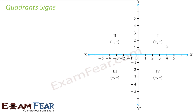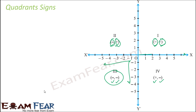In the first quadrant both x and y coordinates are positive. In the second quadrant x is negative and y is positive. In the third quadrant both are negative. In the fourth quadrant x is positive and y is negative. Don't memorize — just understand why. In the first quadrant all distances are positive; in the third both are negative; and so on.